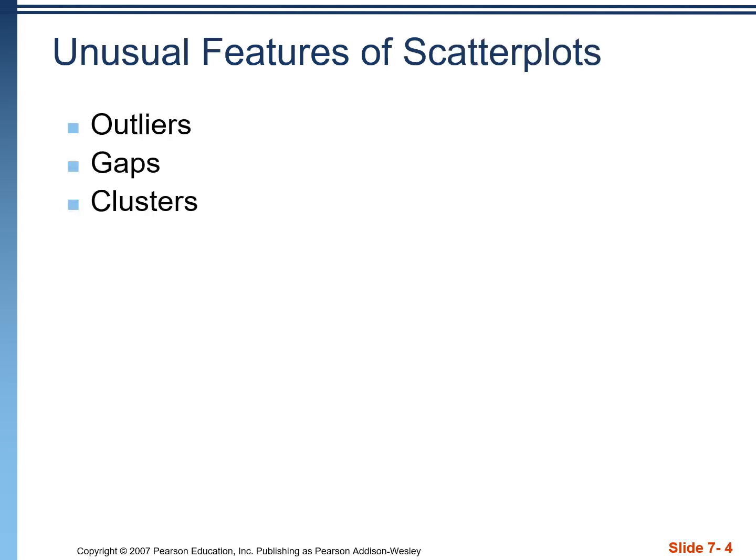Unusual features — most notably, these are outliers that we see: points in the scatterplot that are far away from the cluster of other points. But we'd also want to note if we have any gaps or clusters in the data.